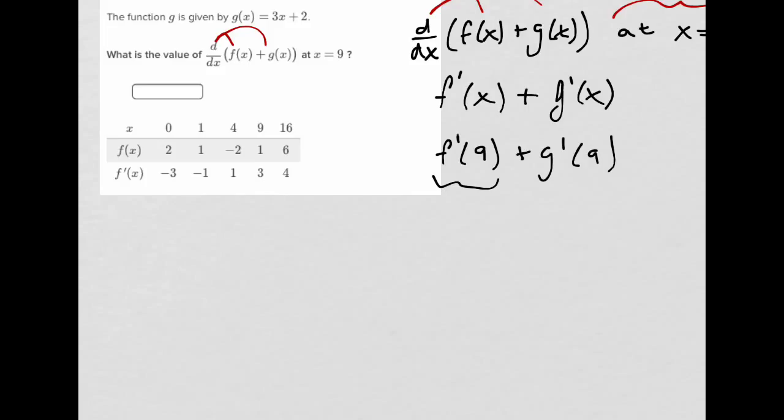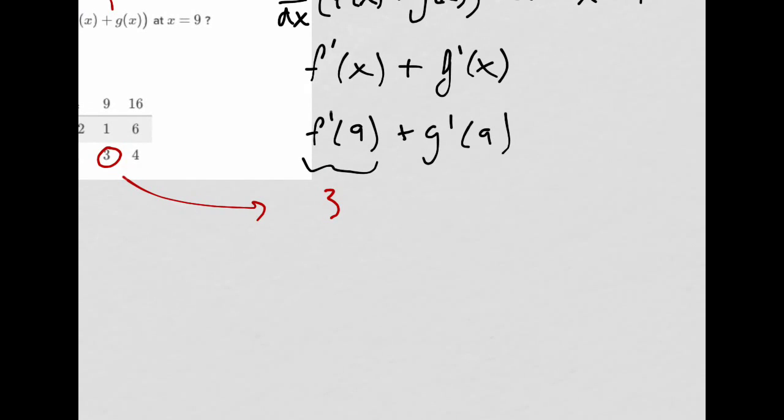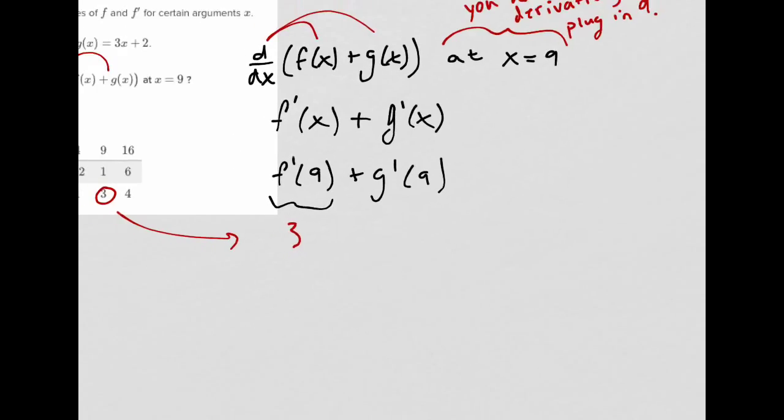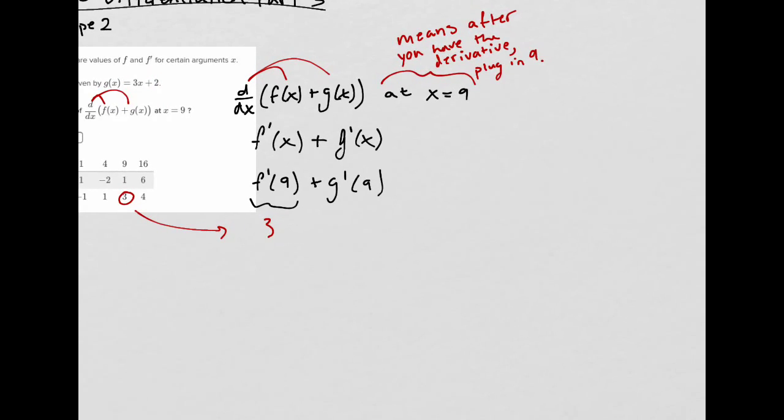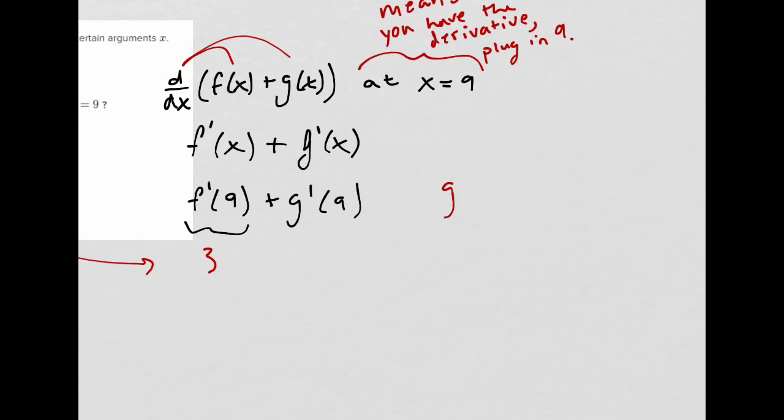So this is 3. There we go. That would be 3. So that's where I got that from. And then g prime of 9. Ooh, that's a little bit more weird. We have g, though. We have g. This is given.